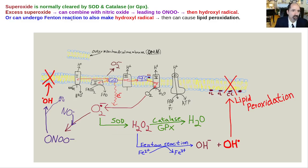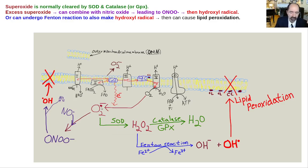Superoxide is normally cleared by superoxide dismutase and catalase or glutathione peroxidase. Here is the electron transport chain in the mitochondria, the intermitochondrial membrane. Electrons are transferred down these protein complexes, but in certain contexts there will be leakage of electrons or reversal of electron transport, whereby a single electron will come down to the oxygen — and that is superoxide. The dot here means it's a free radical having an unpaired electron in its outer orbital.